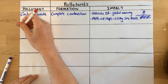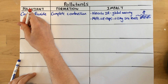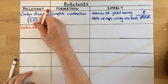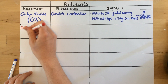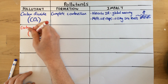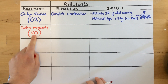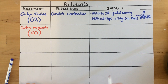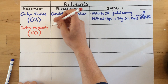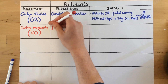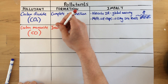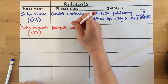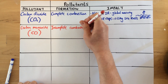The next pollutant we need to know about is carbon monoxide. The formula for that one is CO — monoxide meaning one oxygen. How this is formed is from incomplete combustion of a hydrocarbon, rather than complete combustion.